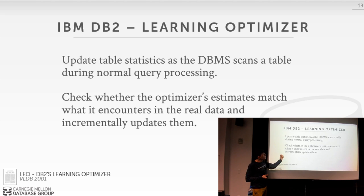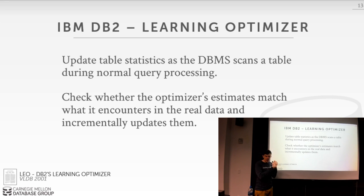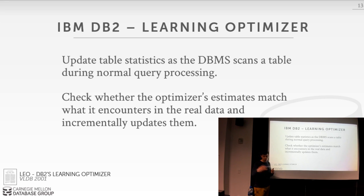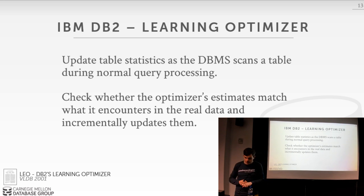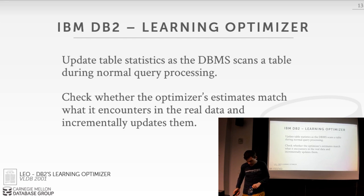LEO's approach was purely statistics-based, not machine learning, but conceptually it resembles reinforcement learning: make an estimate, take an action, observe the actual result, and feed that back to improve the model. This is something being attempted at CMU — putting a deep neural network in the cost model. Microsoft is apparently doing similar work. The concept is sound, but something went wrong with LEO's implementation.